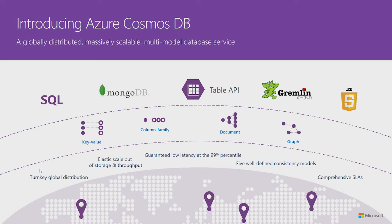To summarize, Cosmos DB provides all these platform capabilities — single-digit millisecond latency, turnkey global distribution, well-defined consistency levels, and elastic scaling of storage and throughput. On top of this, it provides multiple APIs: the core SQL/JavaScript-based API (formerly the DocumentDB API), Table API similar to Azure Table Storage, MongoDB API, and Gremlin for graph traversals. In this session, we'll look at what it takes to build applications using .NET and a couple of these APIs.